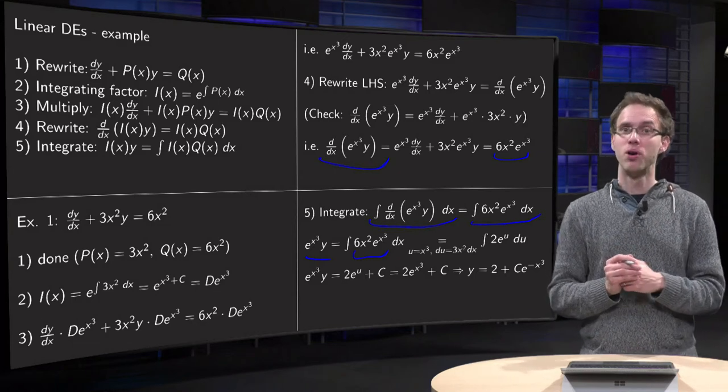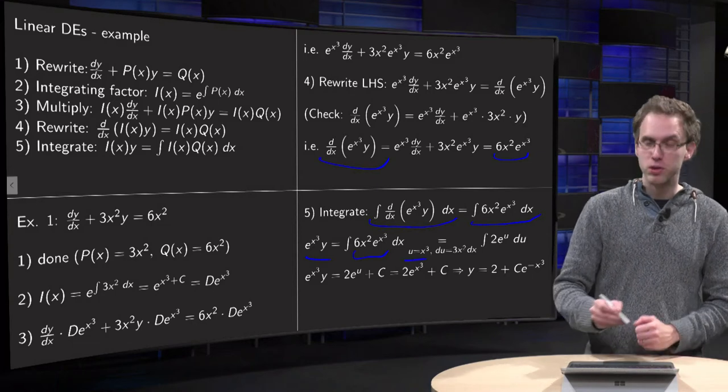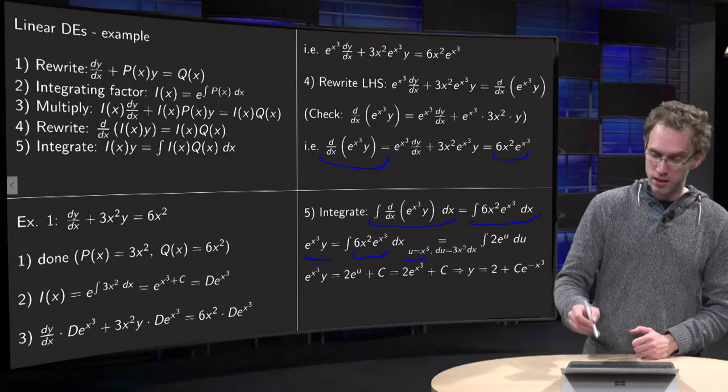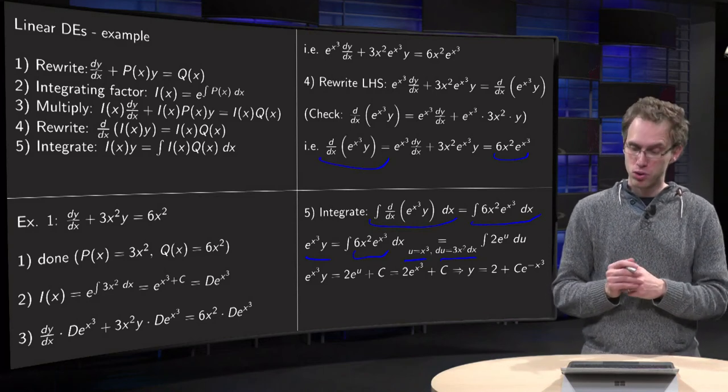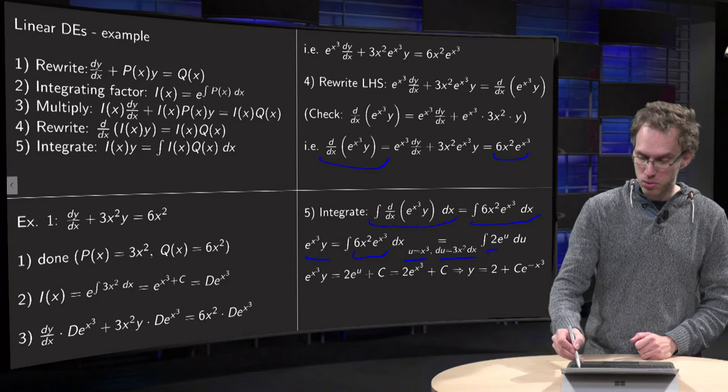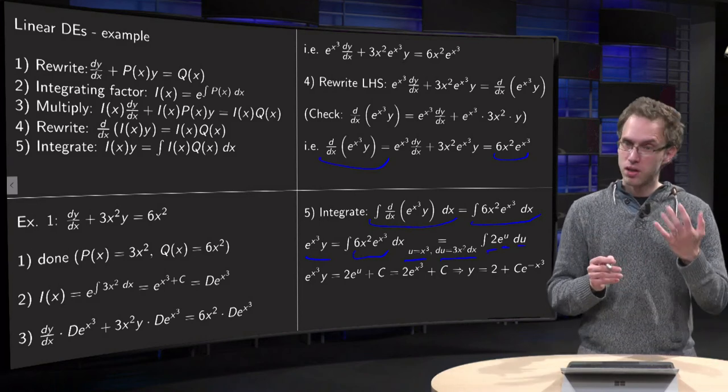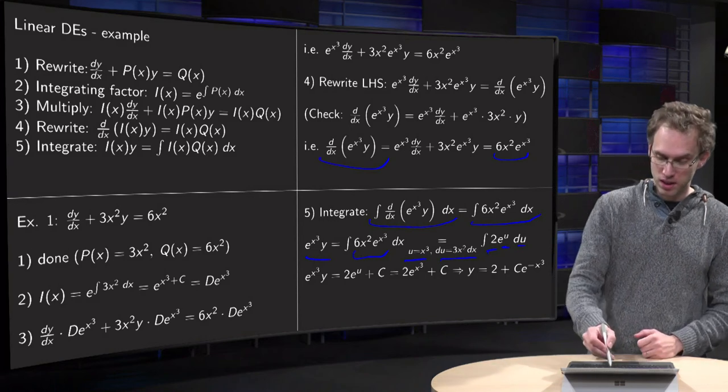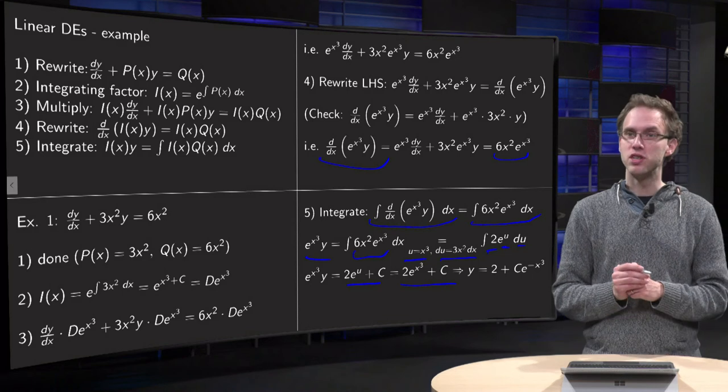Well, it looks horrible. Fortunately we can use the substitution rule. If you put u equals x³, then du equals 3x² dx. And we have a 6x² dx, so that equals 2 du. So we get 2 du and e to the power u. So it's easy to integrate, you get 2 times e to the power u plus some integration constant c. Put u back, 2 times e to the power x³ plus c.